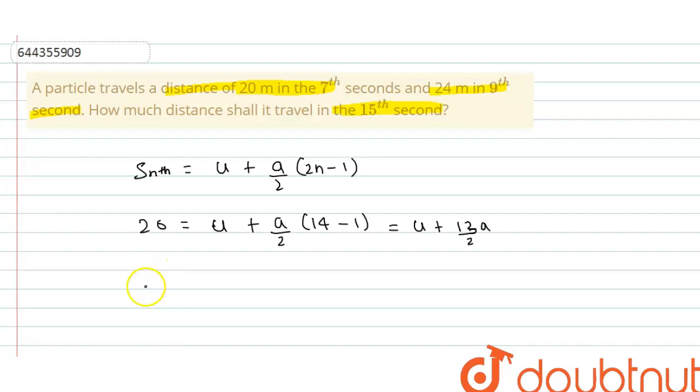So multiply both sides by 2, then 40 is equals to 2u plus 13a.